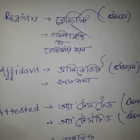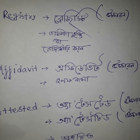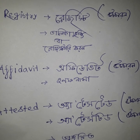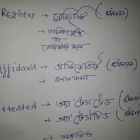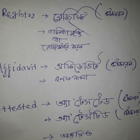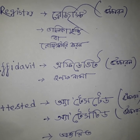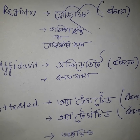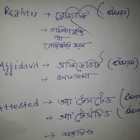In some areas, the pronunciation of these words becomes very difficult. I am trying so that we can pronounce them correctly. The word 'Registry' — R-E-G-I-S-T-R-Y — the correct pronunciation is 'registry'. In Bengali it means 'talika' or to register something. Registry is how it should be pronounced.